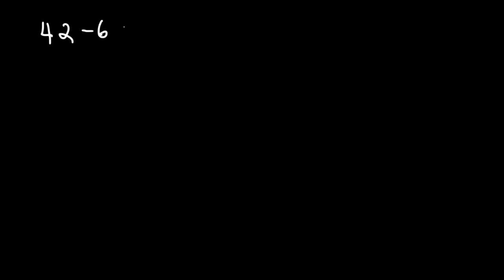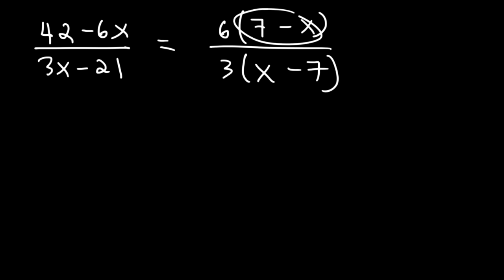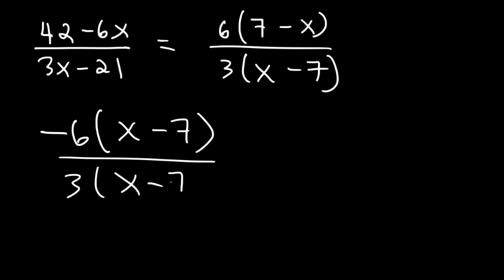Here's another one: 42 minus 6x divided by 3x minus 21. In the numerator, we can take out a 6. 42 divided by 6 is 7, and negative 6x divided by 6 is negative x. In the denominator, we can take out a 3. 3x divided by 3 is x, and negative 21 divided by 3 is negative 7. We need to factor out a negative 1 from 7 minus x, reversing to get x minus 7. We can now cancel x minus 7, leaving negative 6 divided by 3, which is negative 2.